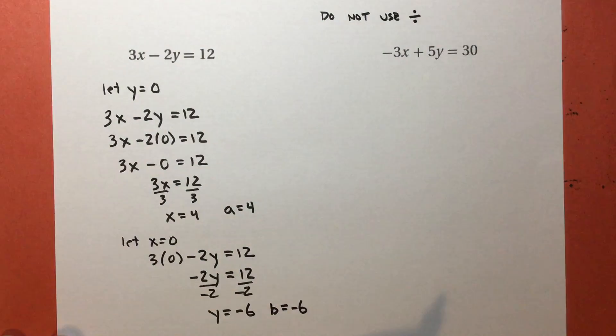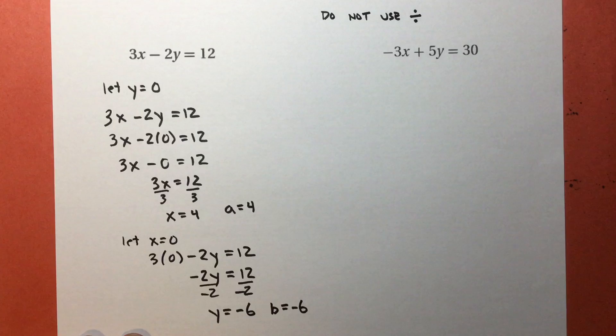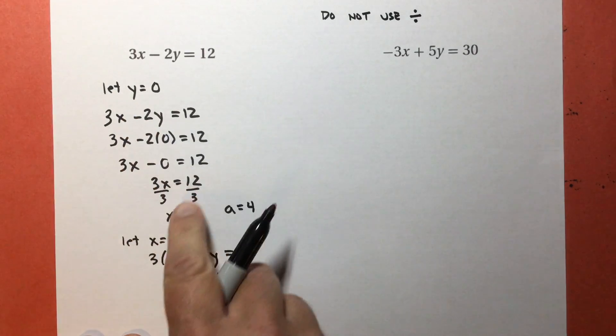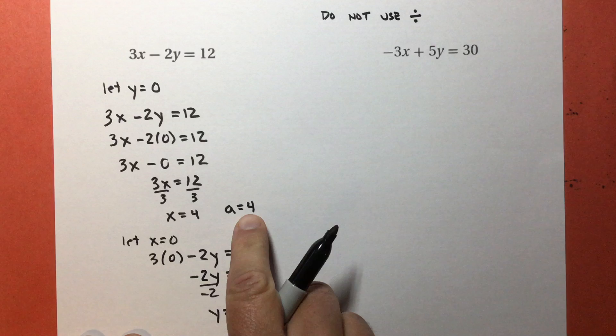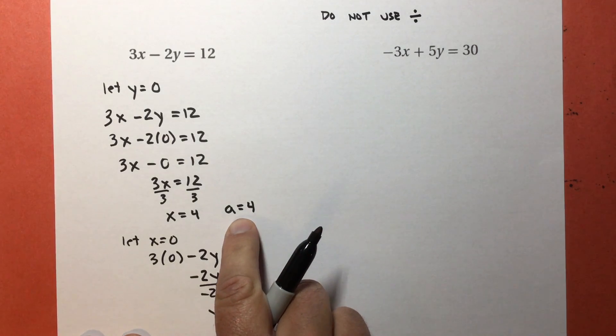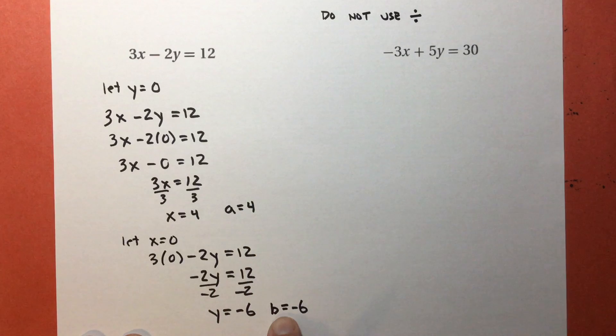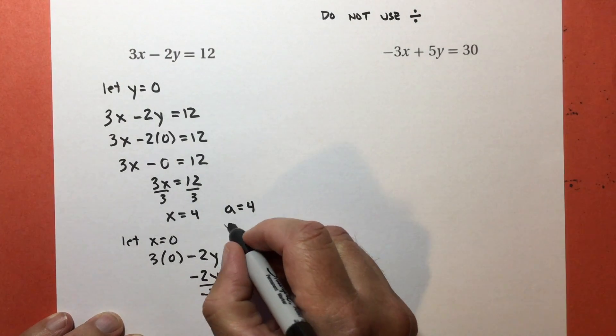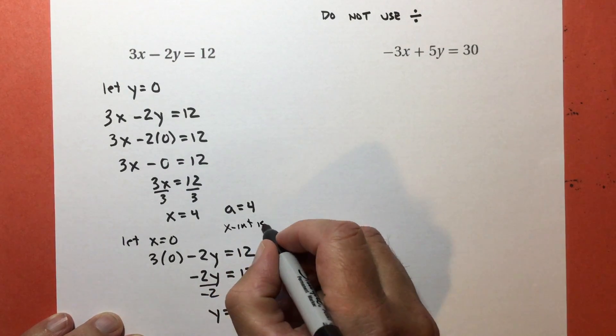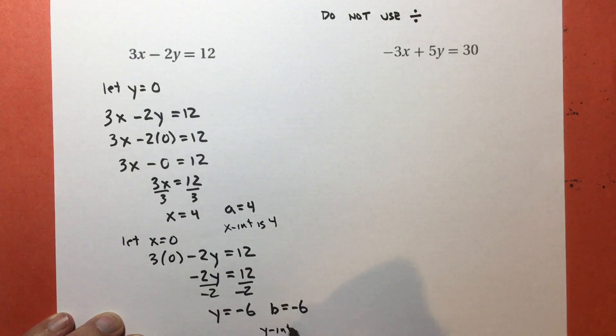So that tells me that my y-intercept is negative 6. Now don't panic about the fact that I'm switching letters. If I replace the y with 0, I get x equals 4. The name of the x-intercept is a. The name of the y-intercept is b. I could also write the x-intercept is 4 and the y-intercept is negative 6. But I'm lazy, so I'm just going to write a equals 4 and b equals negative 6, as long as you and I know what that means.